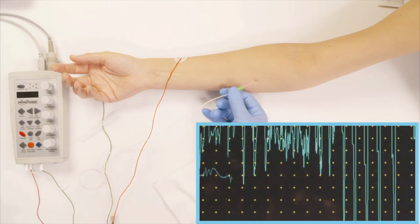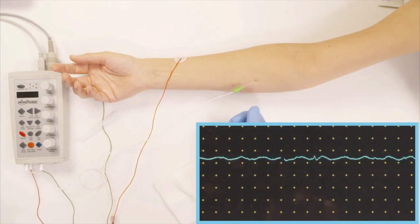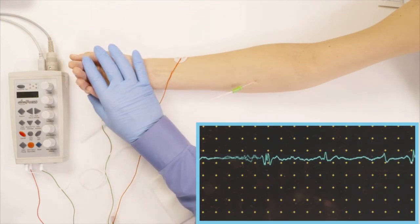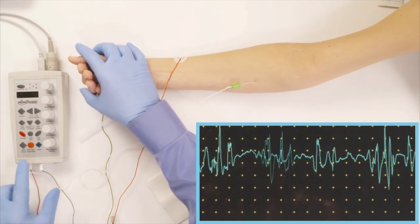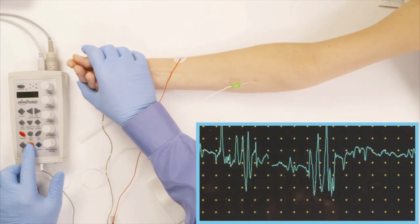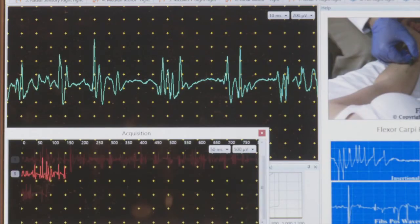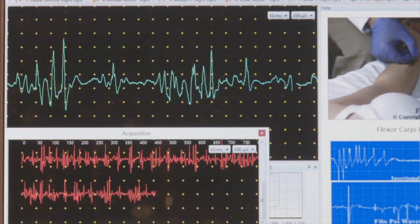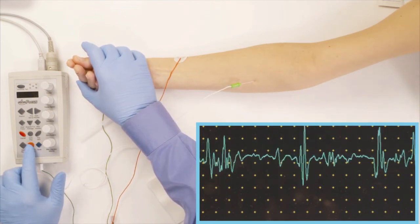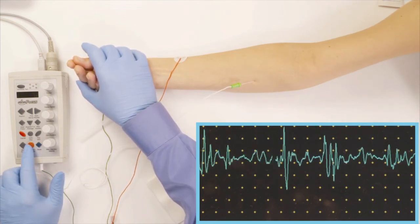The next step is to actually have her activate the muscle slightly. Go up just a little bit with the thumb, very good. Now slight, not much. You can see where the dots are falling in the cloud.